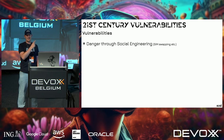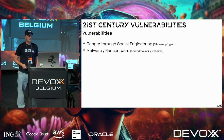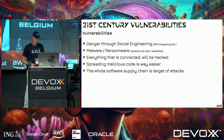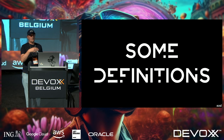Today the vulnerabilities have changed. Social engineering is the most dangerous — look up SIM swapping, it's fascinating and puts two-factor authentication into perspective. We have malware and ransomware everywhere, short messages on your phone, everything connected gets hacked, and spreading malicious code is easier than ever. The entire software supply chain is the target of attacks.